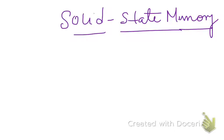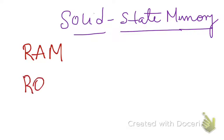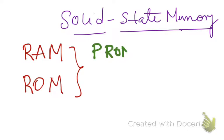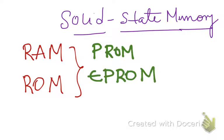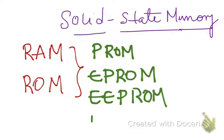So solid state memory — the first thing that will probably come to your mind is RAM, that is random access memory, and ROM, that is read only memory. There are many other types of solid state memories available to us, based on volatile or non-volatile classification. Some of them are PROM, EPROM, EEPROM, and NOVRAM.